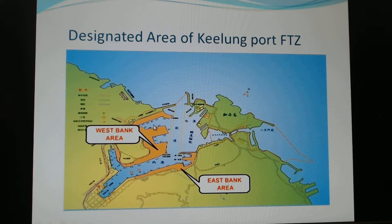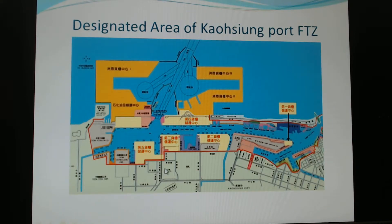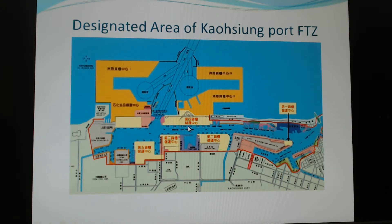Here is a bird's-eye view map of Keelung, located in northeast Taiwan, showing the West Bank area and the East Bank area. This next map shows Kaohsiung. So far, we have six terminals, with the majority designated as Free Trade Zones. The terminals are numbered one through six, and perhaps next year there will be terminal seven.